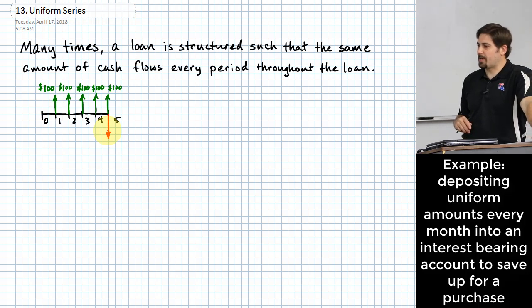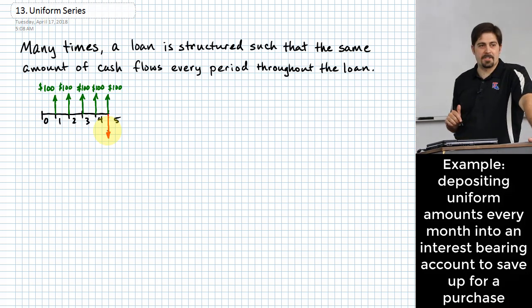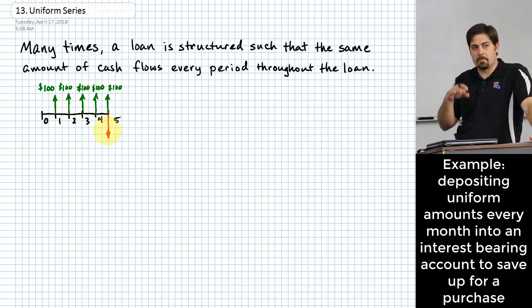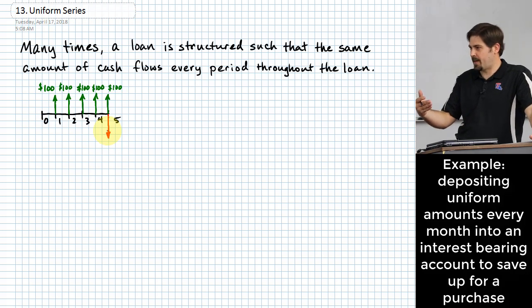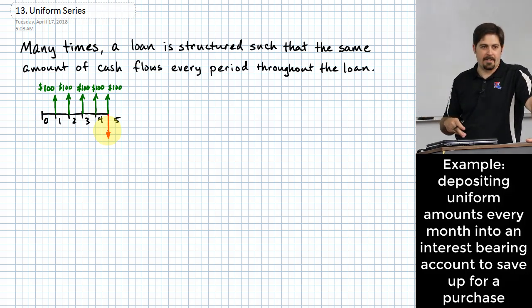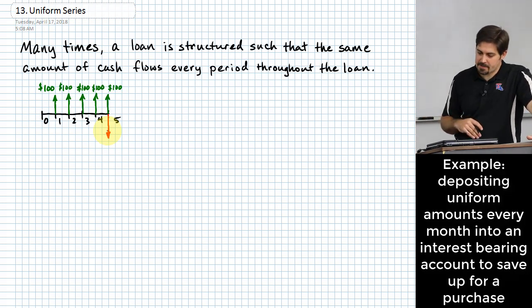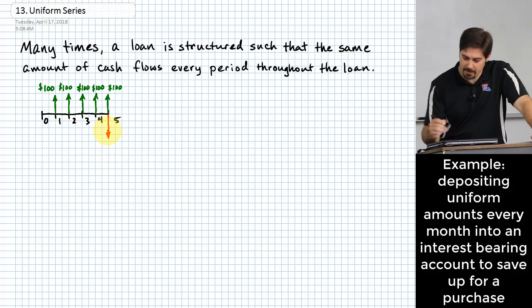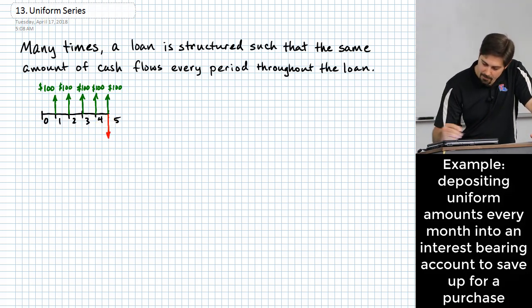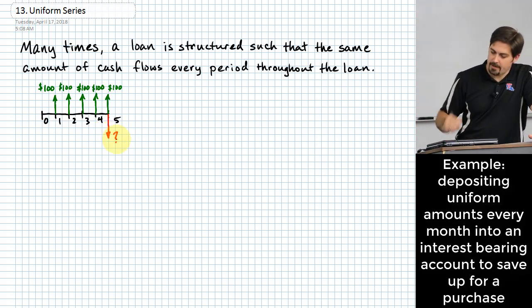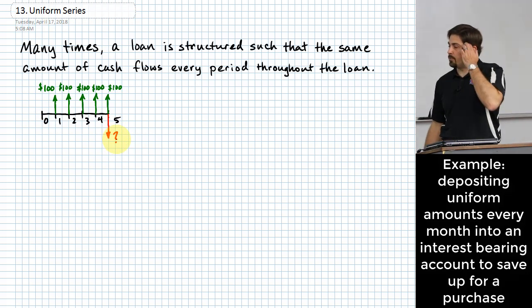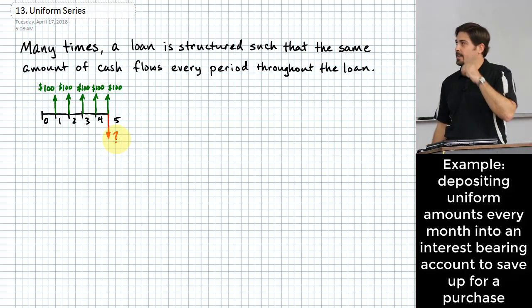This is a little bit different because we're not bringing the wallet into this at all. What we're doing is looking at the bank account as the storage device. So let's say we're doing this and we have to figure out how much could we withdraw at the end if this is what we had been saving.